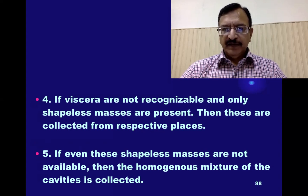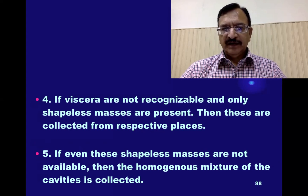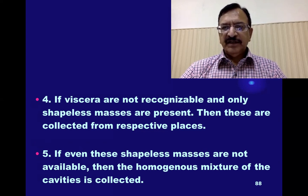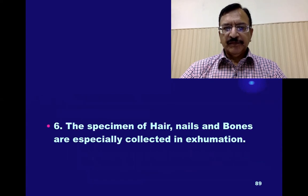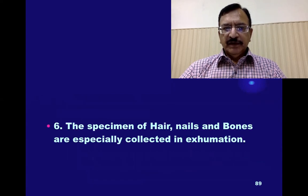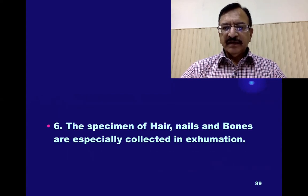They are labeled as they are collected: material from the chest, material from the abdomen. The specimen of hair, nails, and bones is also collected.